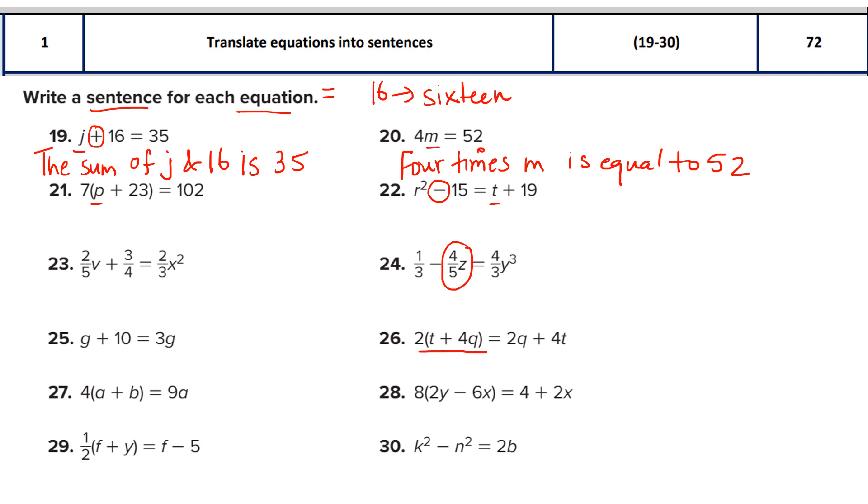Next we move to question 21. Here if you see there is multiplication happening. We can write 7 multiplied with p plus 23, or we can also write 7 times the sum of p and 23. That is equal to how much? Is same as, is equal to - both are correct - is 102. That is also okay.